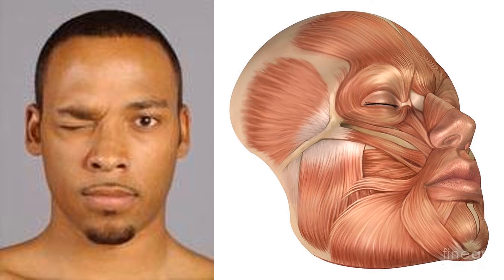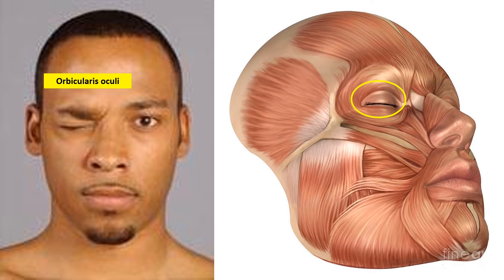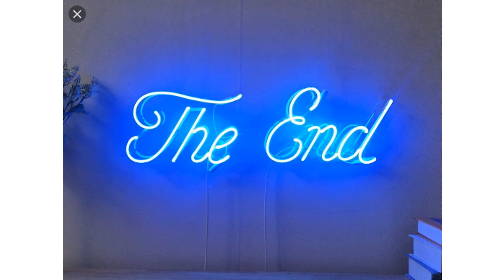This forceful closure of the right eye is done by a muscle called the orbicularis oculi, a circular muscle that surrounds the opening of the orbit.